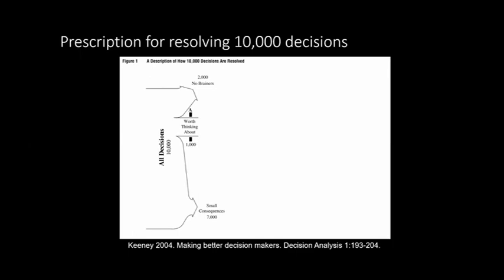Structured decision making is a prescription for resolving many decisions — a diagram from Keeney. He describes that every day we could come across 10,000 different decisions. Some are no-brainers; only about 1,000 are worth carefully thinking about. Of those, only 40 get systematic thought. Thirty are resolved using qualitative concepts of decision analysis to guide clear thinking about the problem, objectives, or alternatives. Only 10 additional questions require true quantitative analysis, and only about 6 out of 10,000 require higher-tier modeling.